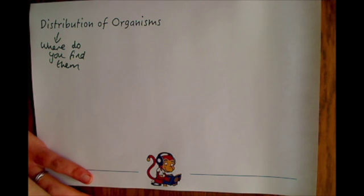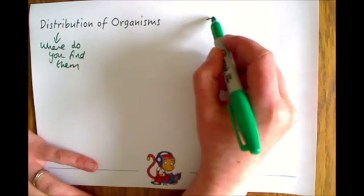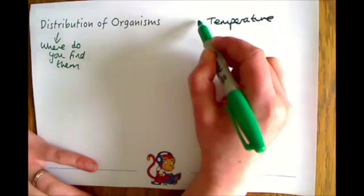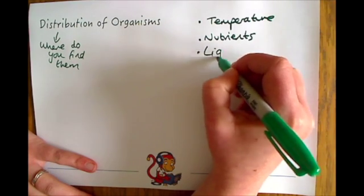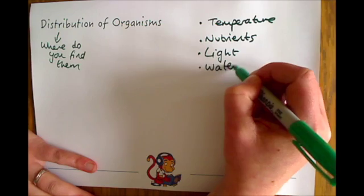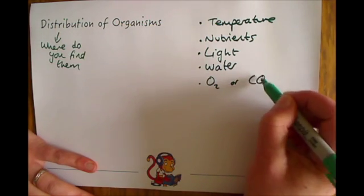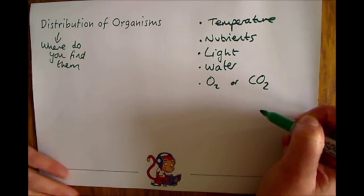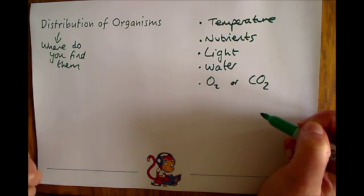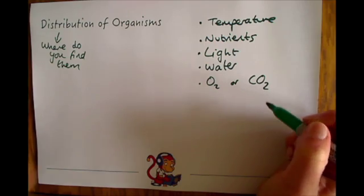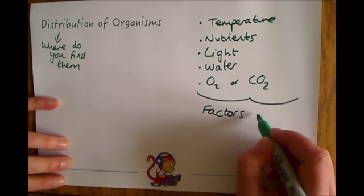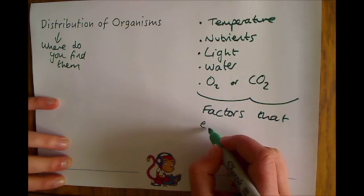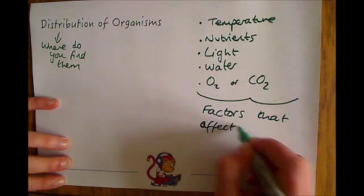There are several different factors that affect where an organism might be found, including things like temperature, the availability of nutrients, light, water, oxygen, or carbon dioxide, depending on what the organism is. If we're talking about animals, then predators might play a part in where the organism is distributed. So all these things are factors that affect the distribution of an organism, and you might be asked to list a couple of those in an answer.